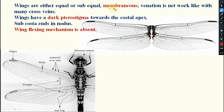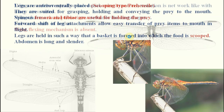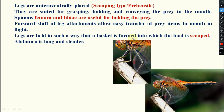Wings are either equal or sub-equal and membranous, useful for flight. Venation is network-like with many cross veins. Wings have a dark pterostigma towards the costal apex region. The subcosta ends at the nodus. Wing flexing mechanism is absent — while at rest, dragonflies cannot bring their wings up to their abdomen. This is important for both Ephemeroptera and Odonata.